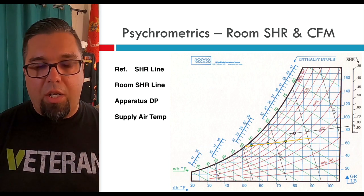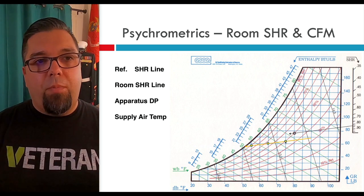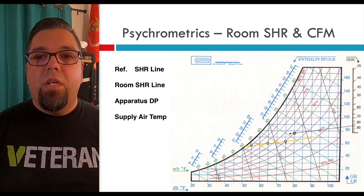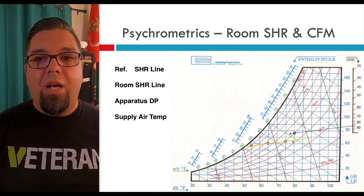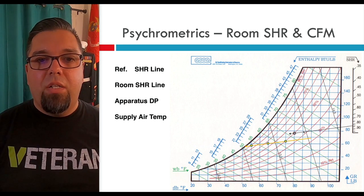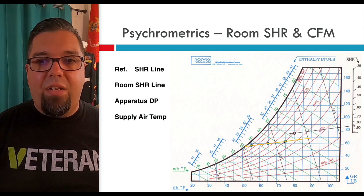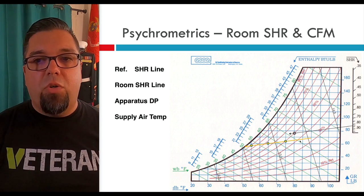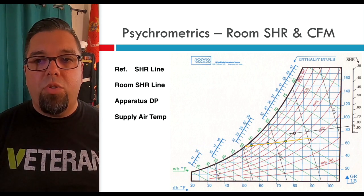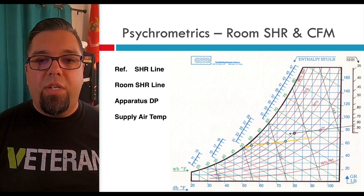Then we're going to plot our design temperatures. In this example, our design temperature is 75 degrees and 50% relative humidity — the one I've been using, and that's what's in ACCA Manual J Table 1A for most of the United States. Then we draw a line parallel to our sensible heat ratio reference line. That yellow line is going to be our room sensible heat ratio line. Draw it all the way through until it intersects our dew point — in this example, right around 50 degrees.